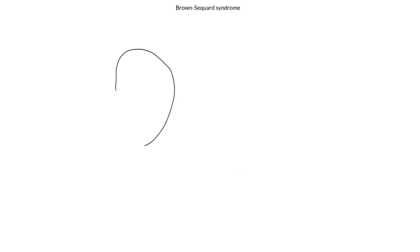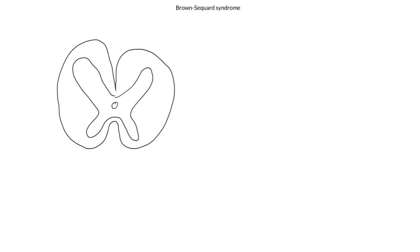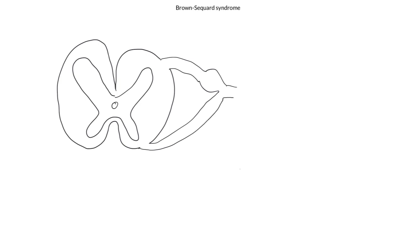Here is a transverse section through the spinal cord, and for our purposes at the moment it doesn't matter what level it is at. Here's the central canal, here's the dorsal horn and the ventral horn. We can also add a dorsal root and a ventral root — a dorsal root with a dorsal root ganglion and a ventral root connecting up with that, and then the two of them coming together to form the spinal nerve.